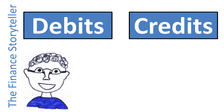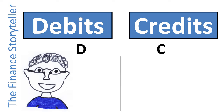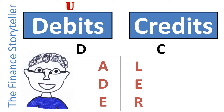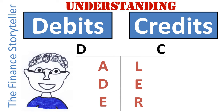Is there an easy way to remember what goes to debit or credit in accounting? Yes, the easiest way to remember debits and credits is ADE LER. Some teachers will tell you to just memorize it. In this video, we discuss how DC ADE LER works with examples, so you actually understand what is going on. You will see that there is a big difference between memorizing and understanding debits and credits.